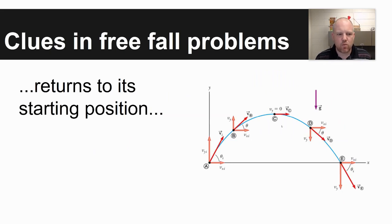Just a third clue is sometimes something will return to its starting position. If you throw an object up in the air and then it comes back down and lands in your hand, whatever your initial velocity is positive, your final velocity would be negative. So they're going to be equal and opposite.